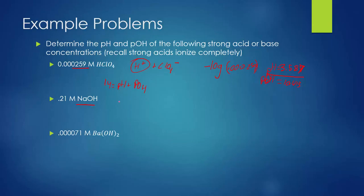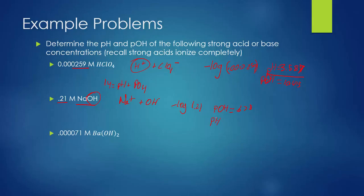For 0.21 M NaOH, a base, it breaks apart into Na+ and OH-. It's a 1-to-1 mole ratio, so we get 0.21 M hydroxide. Taking the negative log of 0.21 gives pOH equals 0.678. The pH is 14 minus 0.678 equals 13.32. This makes sense — it's a base, so pH should be high near 14.